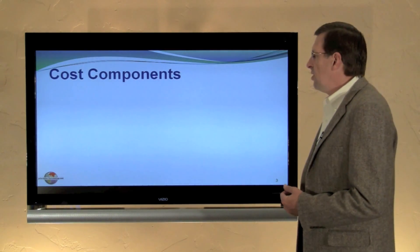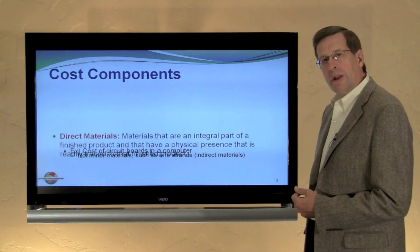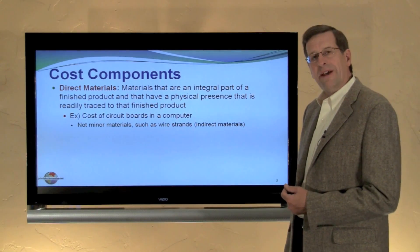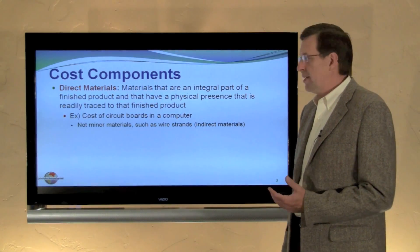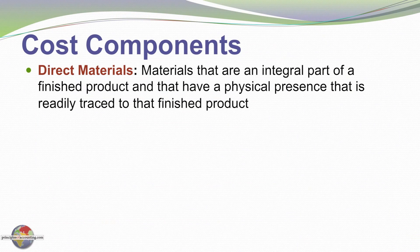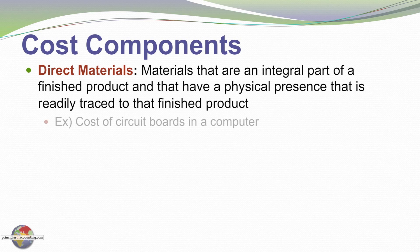The definition of these terms is quite important, so let's look closer at what we mean by the term direct materials. Direct materials are materials that form an integral part of a finished product and that have a physical presence that is readily traced to that product. In other words, you can physically see and touch that particular material component in the final finished product.